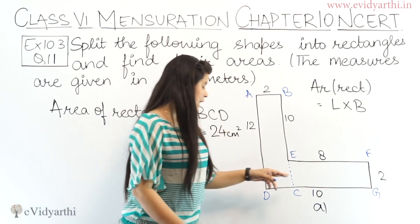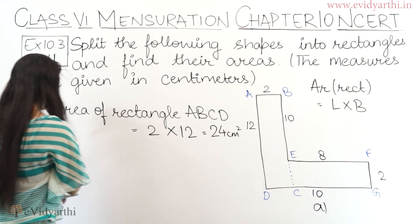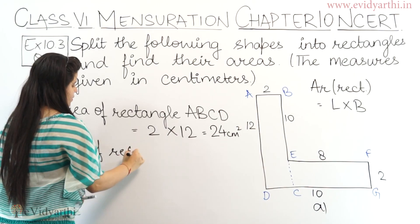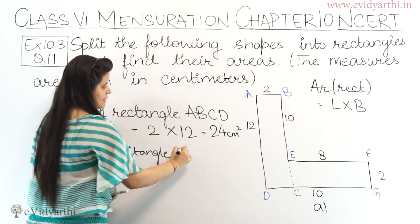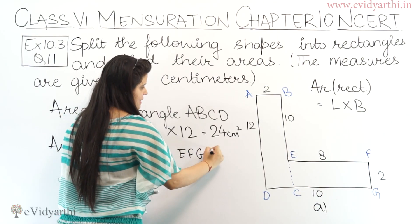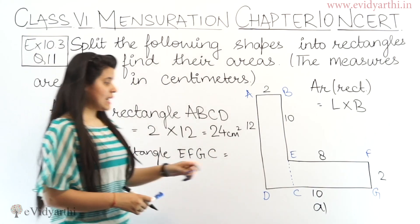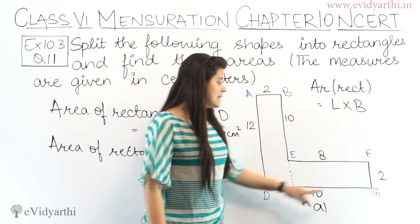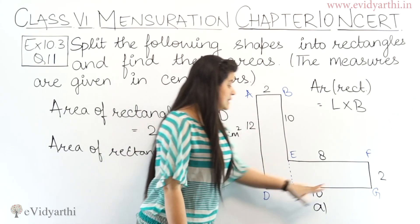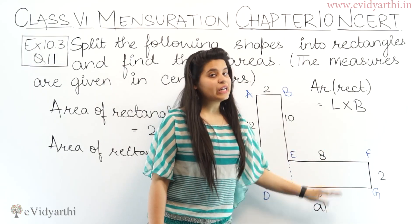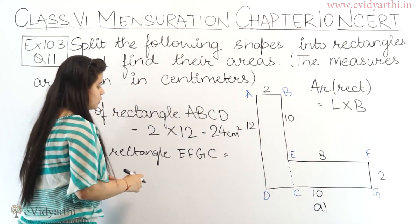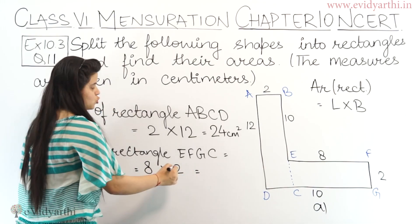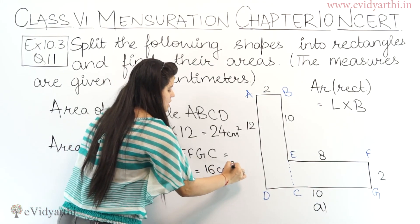Now let's come to the second rectangle, which is EFGC. Area of rectangle EFGC — again we need its length and breadth. Breadth is given as 2 cm. For the length, we don't take DG which is 10; we need CG, so we take EF which is 8 cm (opposite sides are equal). So length is 8 cm and breadth is 2 cm. Therefore 8 into 2 = 16 cm square.